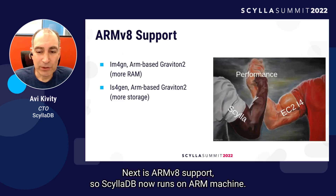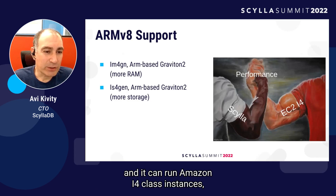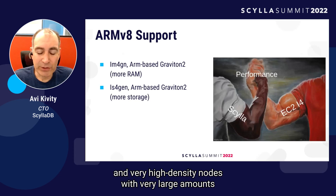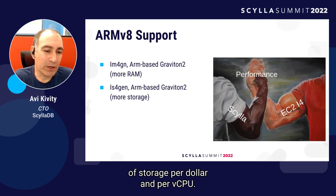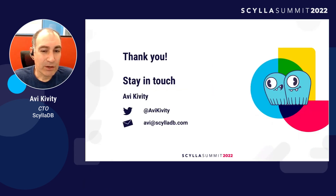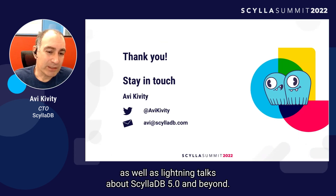Next is ARMv8 support. ScyllaDB now runs on ARM machines — it can run on your M1 Mac in Docker, and it can run on Amazon I4 class instances powered by Graviton 2. You'll get better price-performance and very high density nodes with large amounts of storage per dollar and per vCPU. These are great if you have workloads that are storage-bound and not CPU-bound. Thanks a lot — stay around for more in-depth talks as well as lightning talks about ScyllaDB 5.0 and beyond. Enjoy the summit.